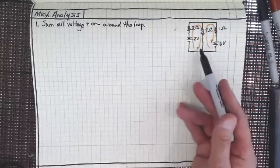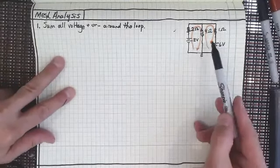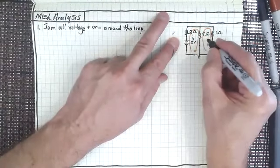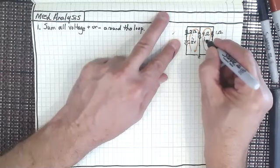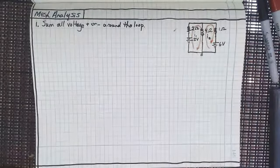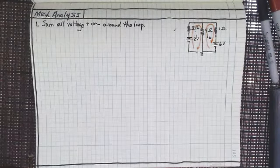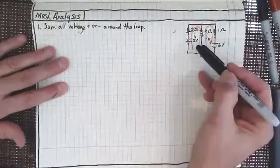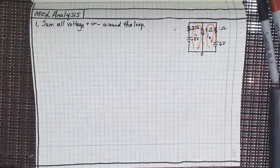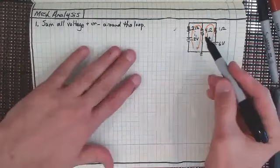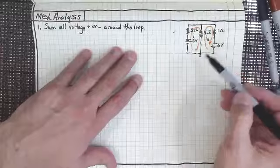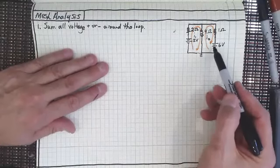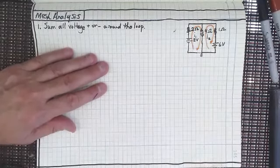What we're doing here is coming up with two independent equations relating to I1 — I'll call this loop I1 and this loop I2. I want to sum all the voltages as I go through the loop. The circuit has two volts, six volts, two ohms, four ohms, and one ohm. I'm going to do this with a very easy two-loop circuit first, and then we'll jump into a three-loop where it's really much more beneficial.